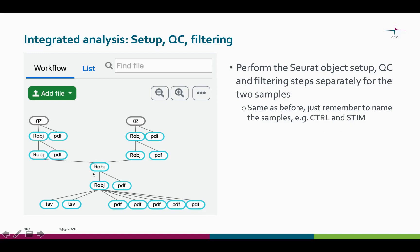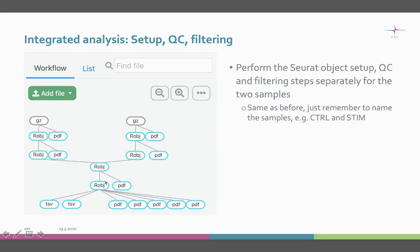Before combining the samples, we have a separate R-object for each sample. From here on, we only have one R-object with all the data in it.